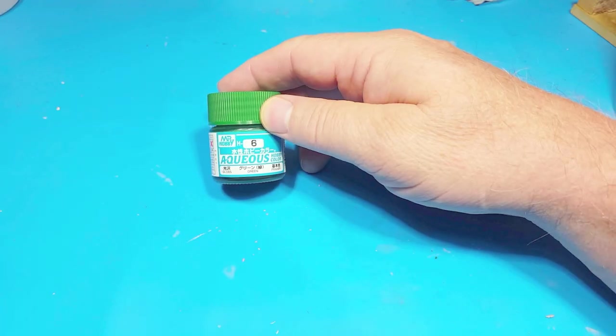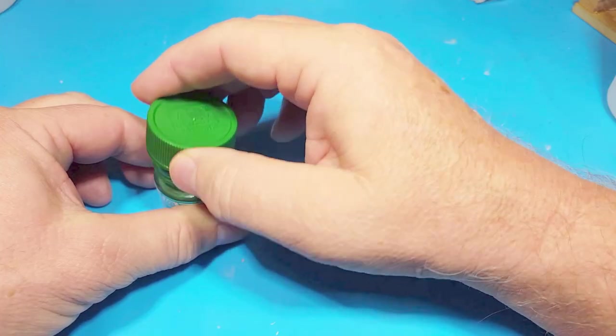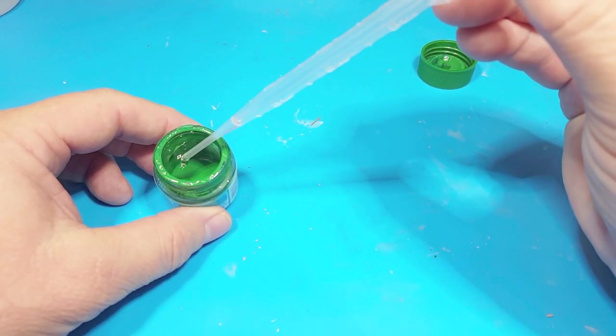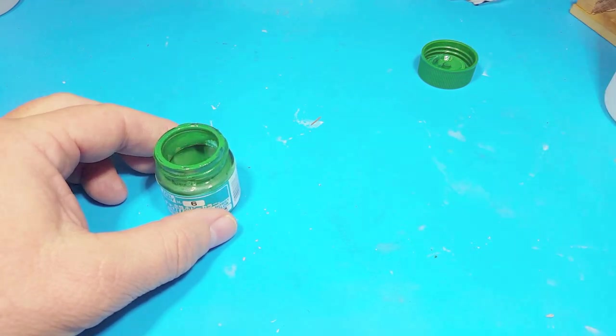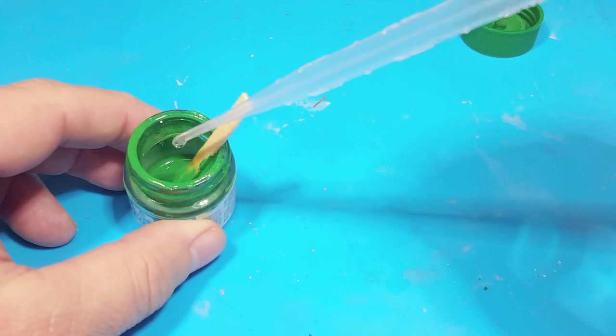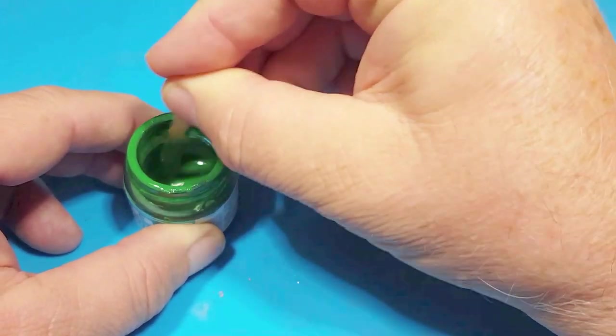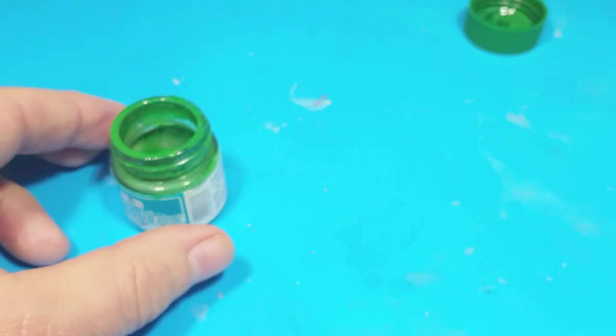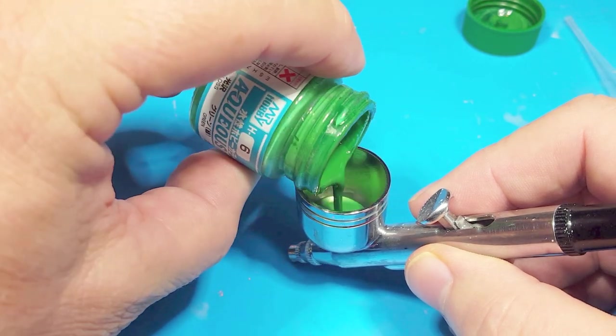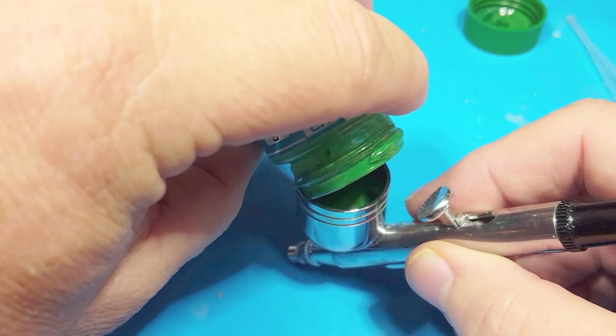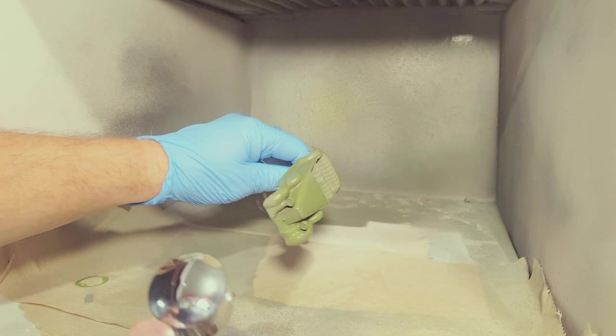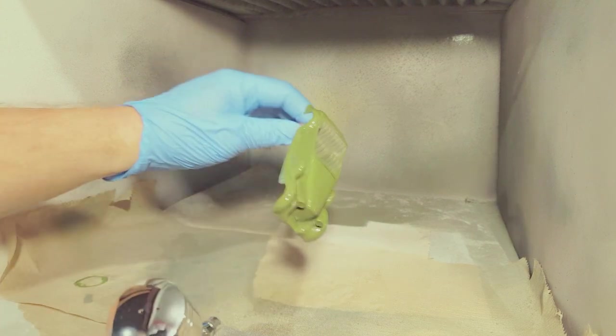So I'm using the Mr. Hobby Aqueous green paint. This is a very close match to the original paint, so I'm not going to mix it with anything. I'm mixing in with it the leveling thinner which keeps it wet longer so that it has a chance to smooth out and it comes with a shinier finish. It doesn't really matter that much because I always put lacquer over top of the finish when I do these models.